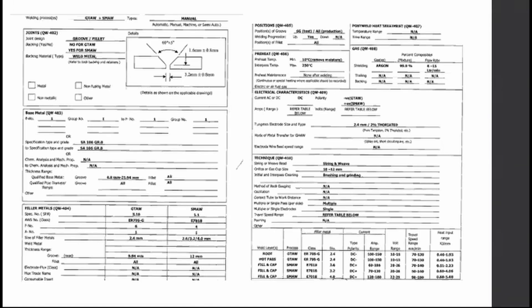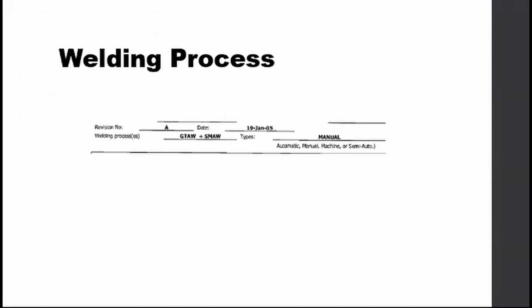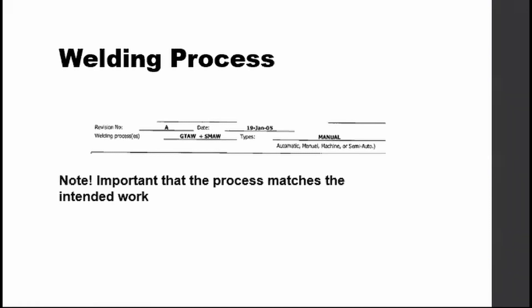This is a sample WPS — it looks a bit overwhelming, but don't worry too much about the format as different standards have different formats, though the content is essentially the same. The first part is the welding process. Whatever process is indicated here, it shall match the work intended. For example, if the metal to be welded is thin sheet metal but the WPS indicates submerged arc welding — which is best for very thick metals as it is machine operated — then that WPS is not for that specific work.